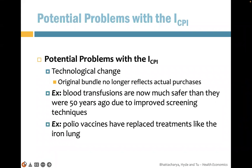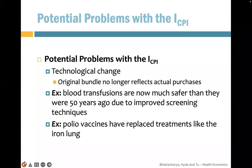CPI index is not perfect. The problem is technological change. Suppose yesterday we used MRI to detect a certain disease, but a new technology in the future is better — more accurate, faster, or cheaper. Then we don't want MRI in our bundle anymore, making it extremely difficult to update. An average American's consumption of medical care is difficult to calculate, and it's hard to distinguish whether price or technology is driving the change. Technological change is one reason CPI has limitations.